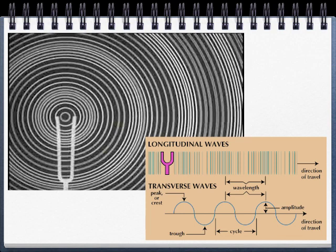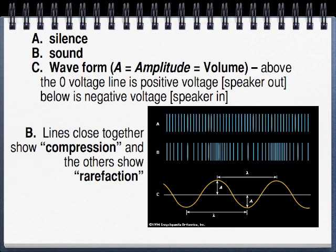The amplitude, or how loud the sound is, is determined by how far away from the zero line the wave is. So that's compression and rarefaction for creating sound waves.